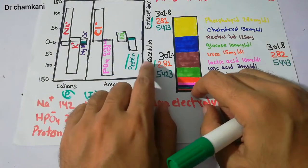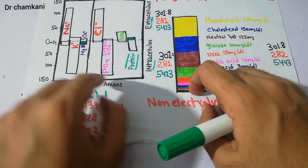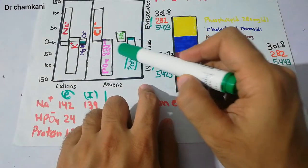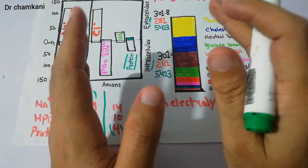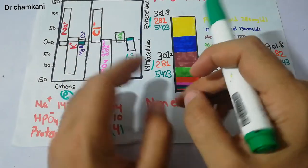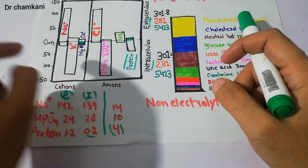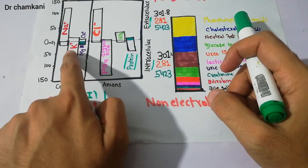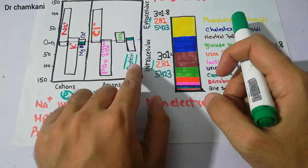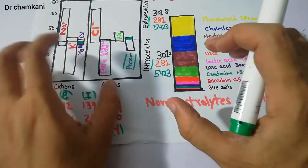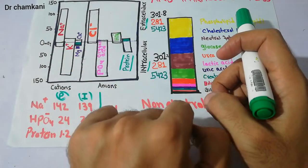If we talk about the intracellular compartment, the solutes that are present inside the cell — suppose this is the cell membrane — the solutes and important ions present inside the cell will determine the osmolarity and osmotic pressure of the intracellular compartment. There are some important cations like potassium and magnesium, and some important anions like phosphate and some proteins. These substances are basically going to determine the osmolarity and osmotic pressure of the intracellular compartment.